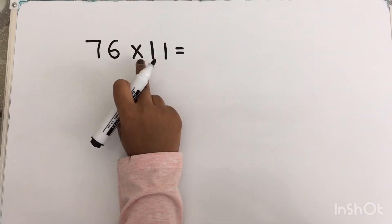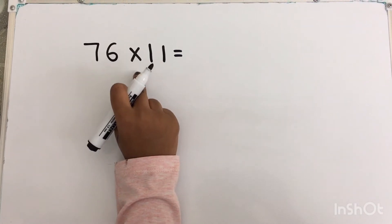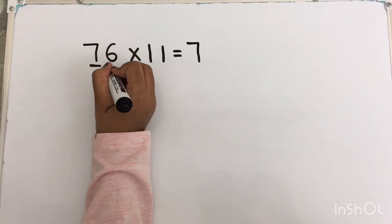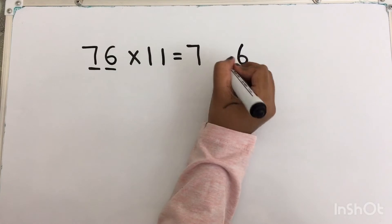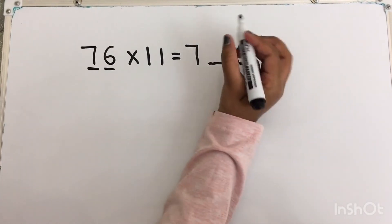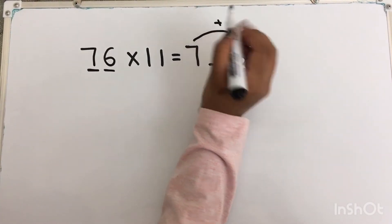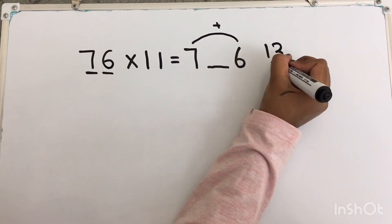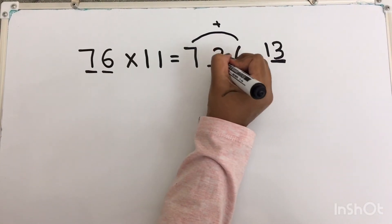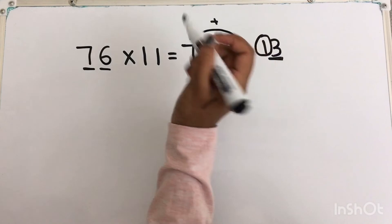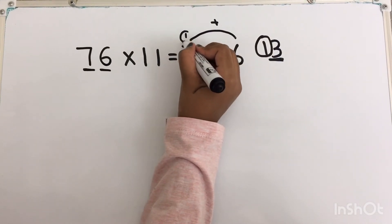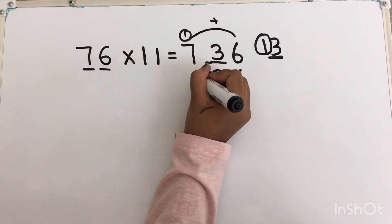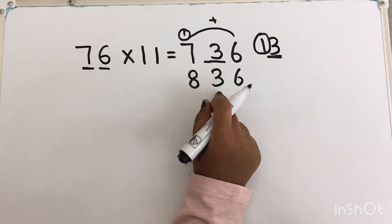This question is a little different. We will be doing this question with carry over. I am going to write the tens digit 7 here and the units digit 6 here. For the middle number, 7 plus 6 equals 13. Since it is a 2-digit number, I take the units digit 3 and write it in the middle, and the tens digit 1 I put as a carry over. So 1 plus 7 equals 8. The answer is 836.